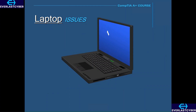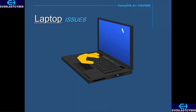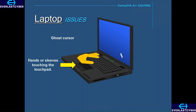Another issue with laptops is that sometimes people complain that as they are typing on the keyboard, the mouse cursor will move all by itself. This is known as ghost cursor. The main reason this happens is that when a person types on a laptop keyboard, they don't realize that the palms of their hand or maybe the sleeve on their shirt is touching the touchpad, which will move the cursor.